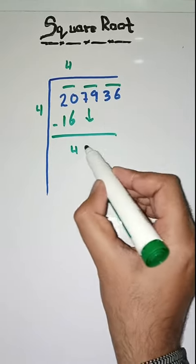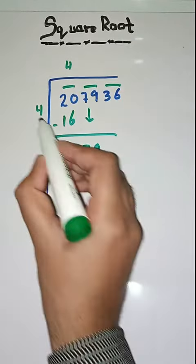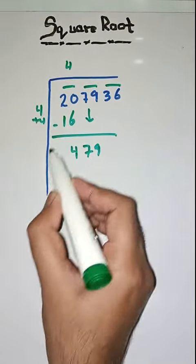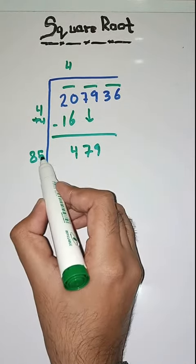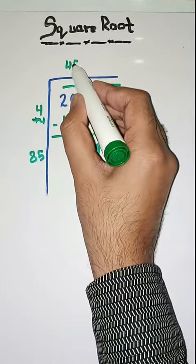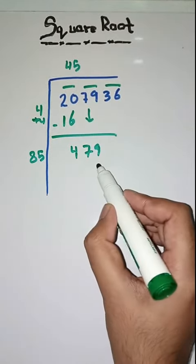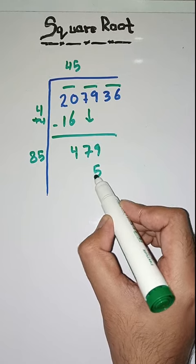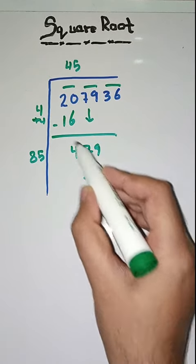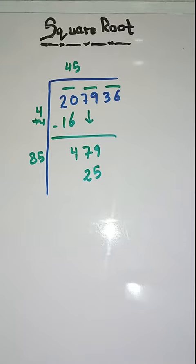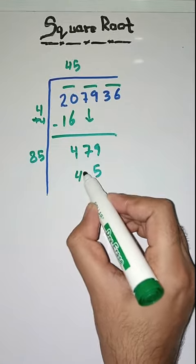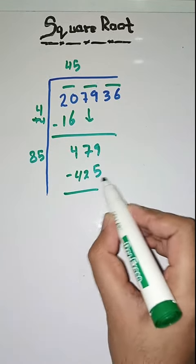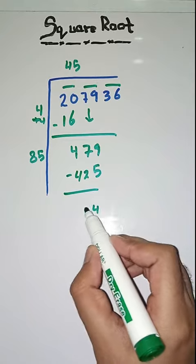Next we take 79. We do this twice. 4 plus 4 is equal to 8. Then we take a number 5. So we multiply 85 with 5. 5 times 5 is 25, and 8 times 5 plus 2 carry is 42. We do minus. 9 minus 5 is 4, 7 minus 2 is 5.